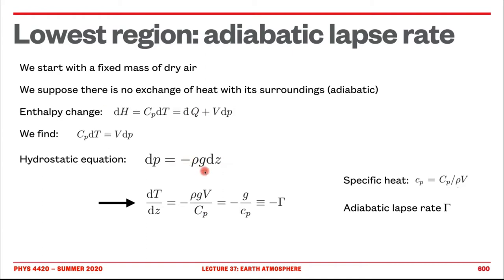Very often we use the specific heat, which is the heat capacity per mass, allowing simplification. Finally, with C_p and g as constants, we get that the change in temperature with respect to distance is the adiabatic lapse rate. It's negative because the temperature goes down as we increase distance from the Earth. To make the adiabatic lapse rate a positive number, we place a minus sign. This is fairly standard.